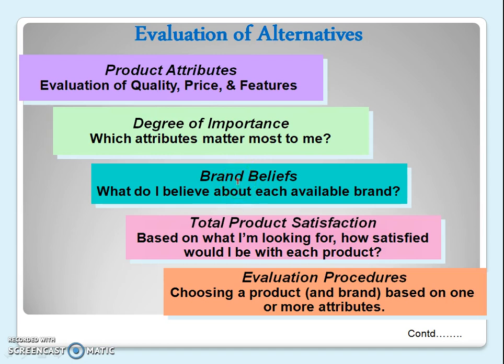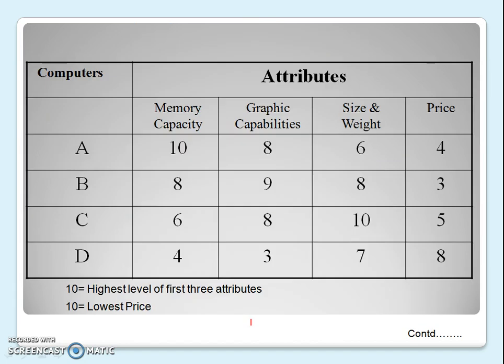Some people make decisions based on brand beliefs alone — they think a brand is good and buy it without any evaluation. Others look for overall package satisfaction — which attributes they like and which they don't — and choose the most appropriate option. Finally, the evaluation procedure leads to choosing a final product or brand on the basis of one or more attributes.